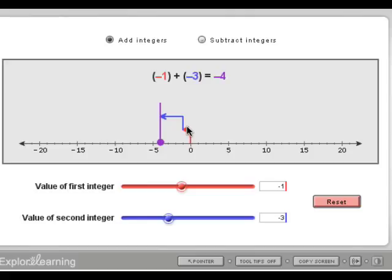So remember that when we add a negative, we move further left on the number line. So negative 1 plus negative 3 is negative 4.